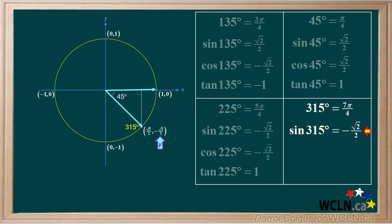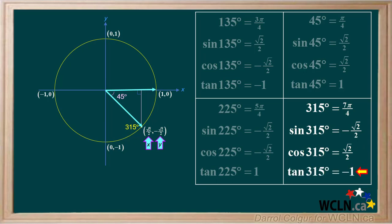The sine is y over r, which is negative root 2 over 2 over 1, or negative root 2 over 2 — the sine of any angle in the fourth quadrant is negative. The cosine is x over r, which is positive root 2 over 2 over 1, or positive root 2 over 2 — cosine is positive in the fourth quadrant. The tangent is y over x, which is negative root 2 over 2 over positive root 2 over 2, or negative 1 — tangent is negative in the fourth quadrant.